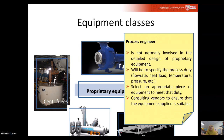For a process engineer, they are not normally involved in the detailed design of proprietary equipment. Normally what the process engineer needs to do is specify the process duty of the equipment — such as flow rate, heat load, temperature, and pressure — and then select an appropriate piece of equipment. You need to select because normally there are several types of pumps, so you need to identify which pump is suitable for your fluid — whether it is Newtonian or non-Newtonian. The process engineer will also consult with vendors and discuss with them to ensure the equipment supplied is suitable.